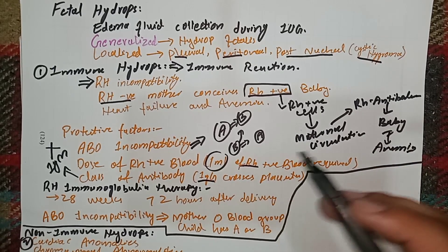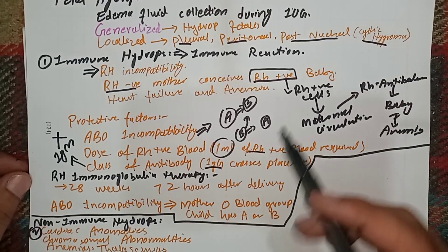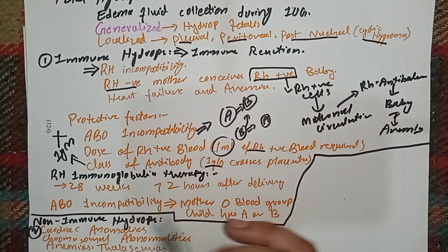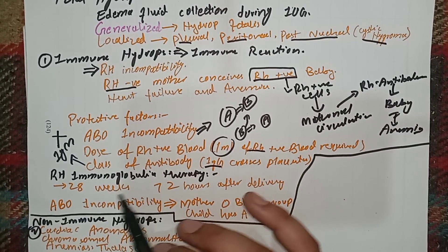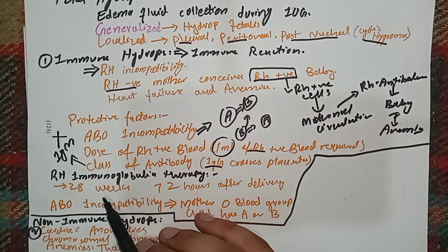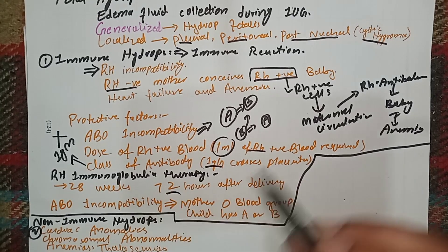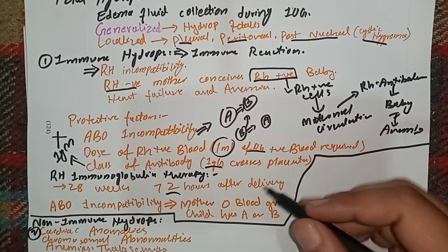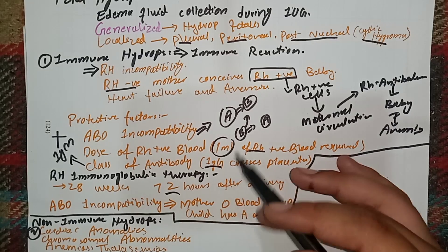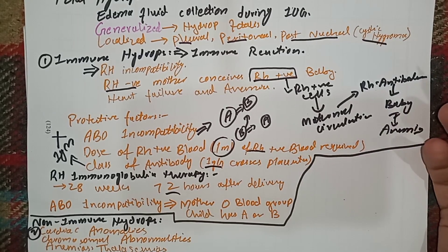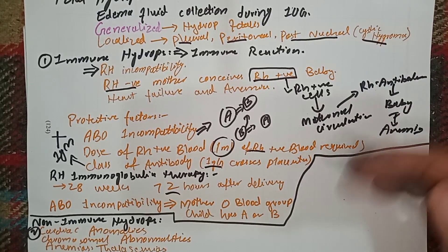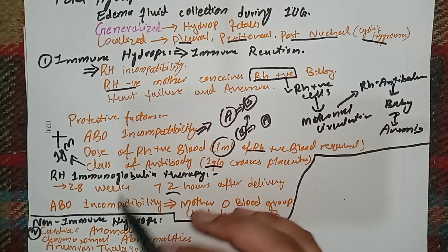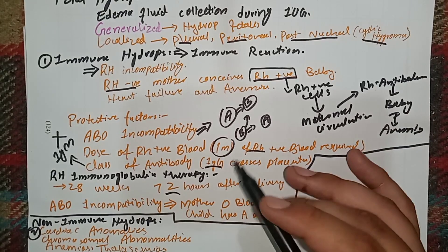This immune response can be prevented when an RH-negative mother conceives an RH-positive baby by administering RH immunoglobulins. One injection is given at 28 weeks of pregnancy and another is given within 72 hours after delivery. If RH-positive blood cells from the baby enter the mother, these RH immunoglobulins will neutralize those red blood cells, prevent maternal sensitization, and prevent the overall immune response.